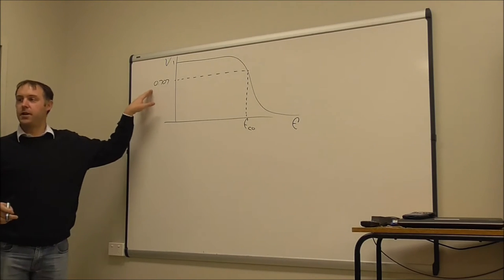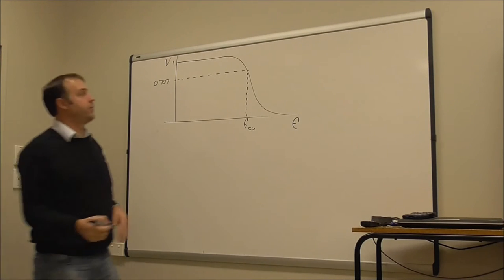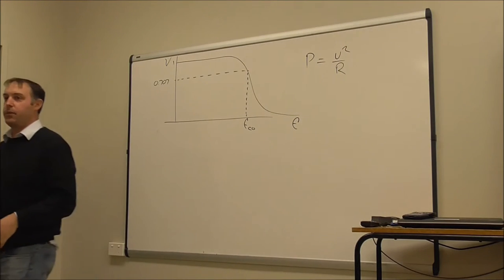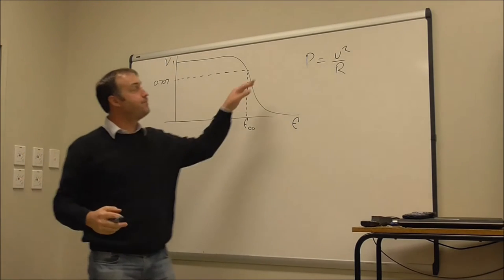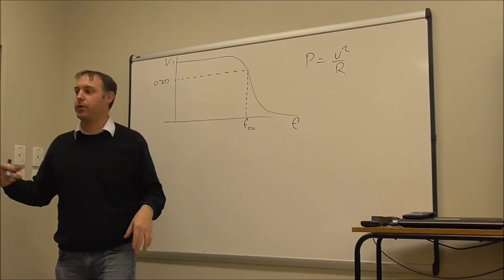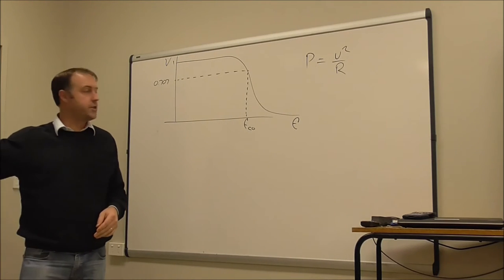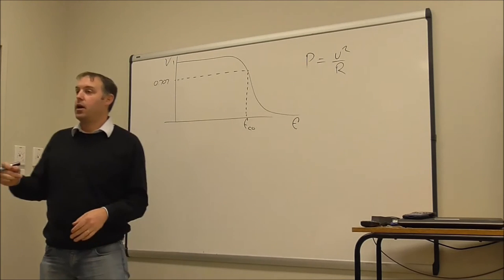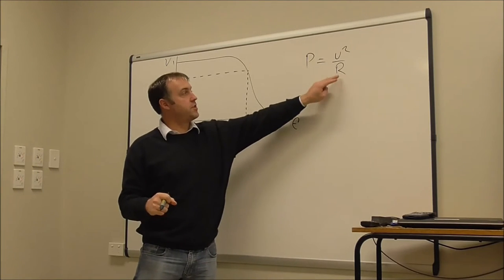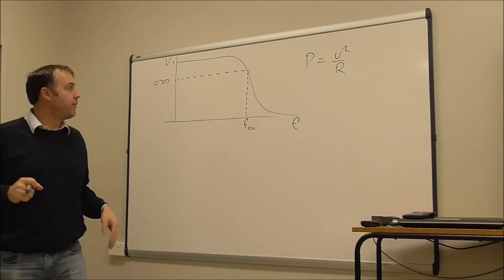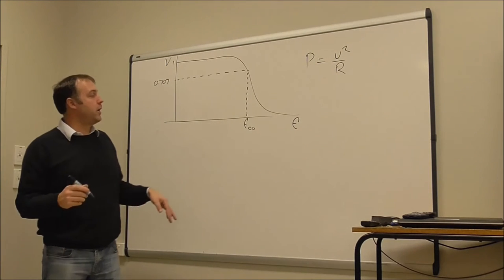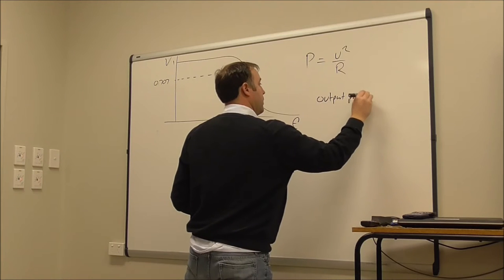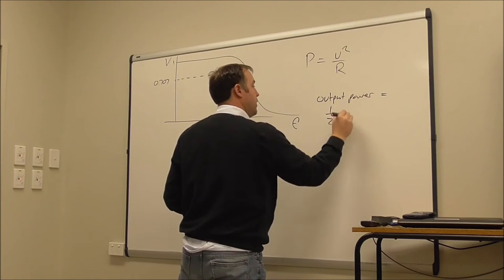Now why 0.707? If you remember the formulas for power — that's one of the three formulas we can use for power — if I just had a resistive load on the output, my multimeter or oscilloscope would behave like a large resistive load. We have the resistance and the voltage, so we can calculate the actual output power of our filter. What we're trying to find is where the output power is equal to one half of the input power.